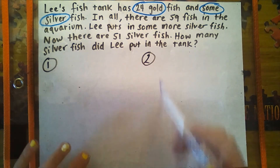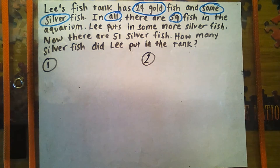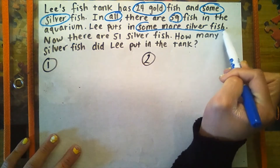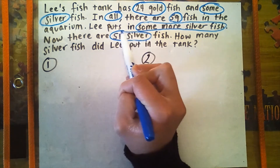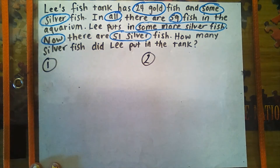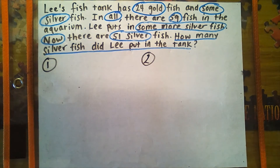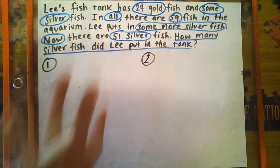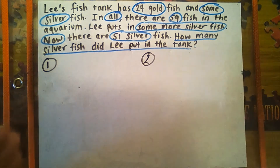In all, there are 59 fish in the aquarium — we're going to circle 'all' and 59. Lee puts in some more silver fish — let's circle that. Now there are 51 silver fish. We're going to circle 'now' because that shows us there's a change in the number. The question reads: how many silver fish did Lee put in the tank? This is a two-step word problem. The first step is to figure out how many silver fish he had before he added extra silver fish.